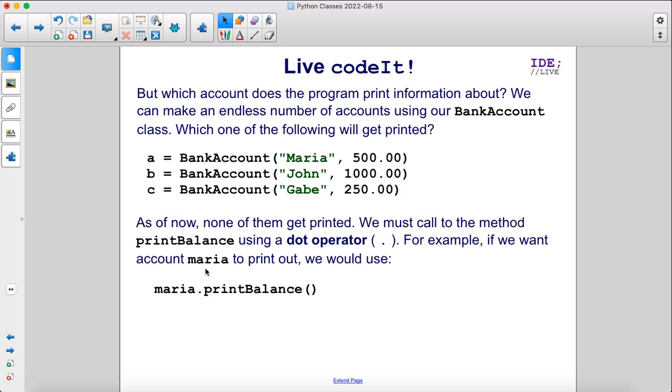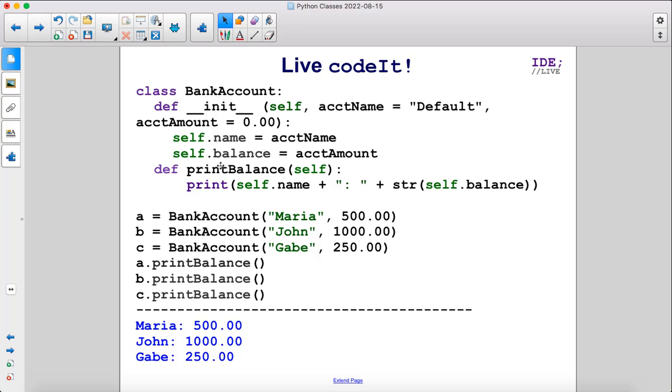For example, if we want account Maria to print out, we would use Maria.printBalance. As you can see here, we create three bank accounts. Then we call the printBalance method on each object here.